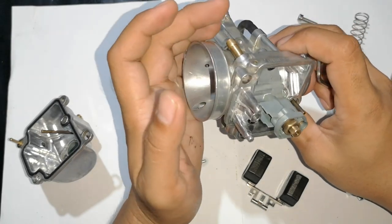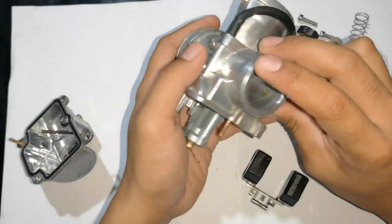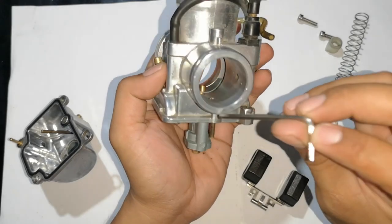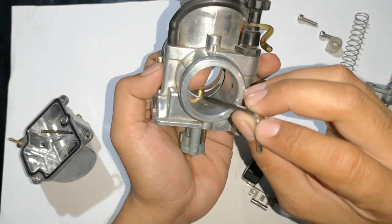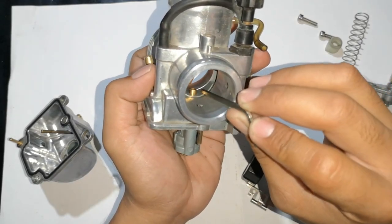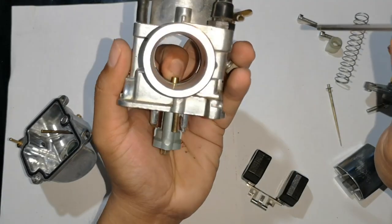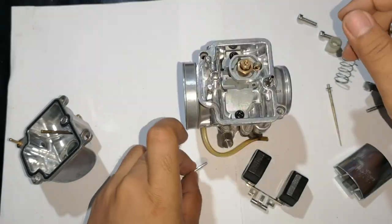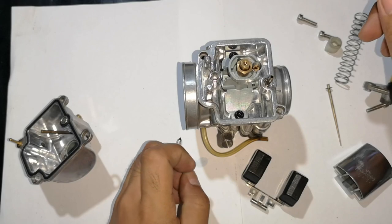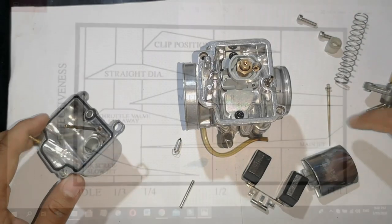So, ngayon, ito lang naman ang components ng ating carburador. Meron din sa loob dito ang tinatawag nating spray nozzle. Yan. Ito. Ito ang nozzle. So, explain natin kung ano ang function ng bawat parts na ito.